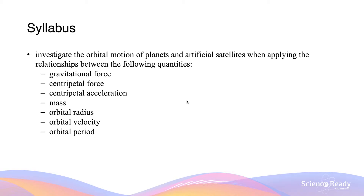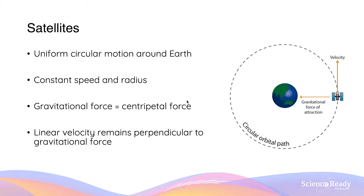Hello everybody, welcome to the video on the orbital motion of planets and artificial satellites. We'll start with satellites. Satellites can undergo uniform circular motion around the Earth, whereby they undergo a circular path as shown, with constant speed and radius.